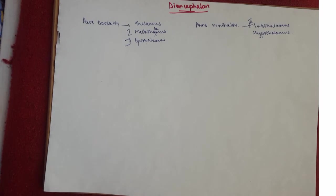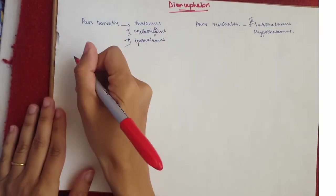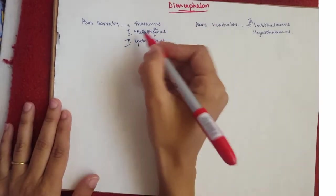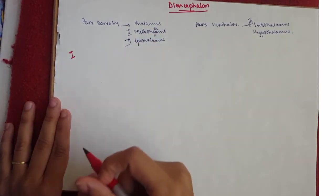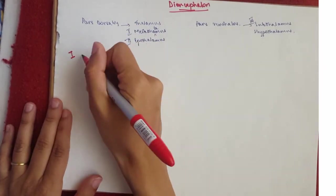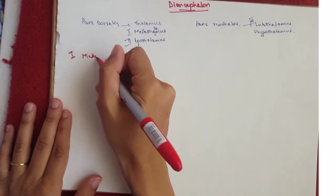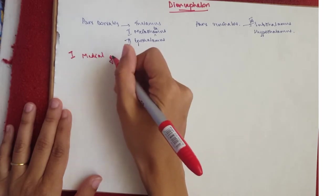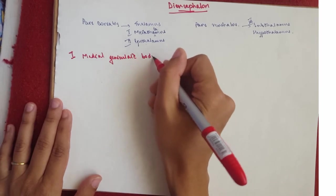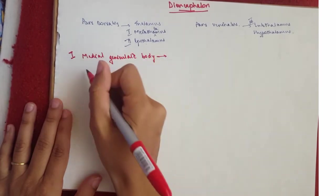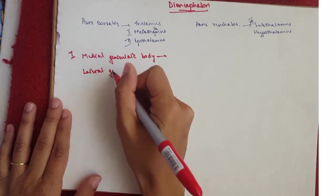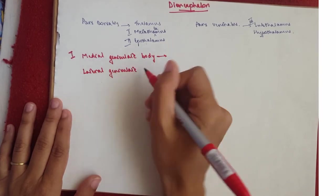Let's start. So the first one, the metathalamus, there's no mnemonic because it's about the geniculate body. So the metathalamus is number one. It's got the medial and the lateral. So we're going to start with the medial geniculate body, and then we've got the lateral geniculate body.